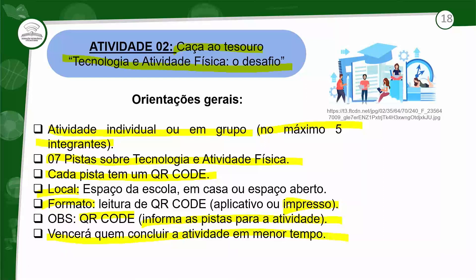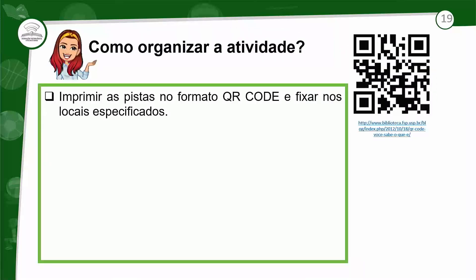O final da atividade é quem concluir em menor tempo. Você tem que estipular um tempo — se é individual, o tempo para o individual; se é em grupo, o tempo para o grupo. Ganha quem faz em menor tempo. Para organizar: primeiro, imprimir as pistas no formato do QR Code e fixar nos locais especificados. Segundo, marcar o tempo da atividade de cada grupo — uma dica é acionar um cronômetro para cada grupo para não ter confusão. Terceiro, para decifrar o QR Code, o aluno deverá fazer a leitura pelo celular. Lembrando que tudo isso vai no material de apoio — você vai receber tudo que está aqui.